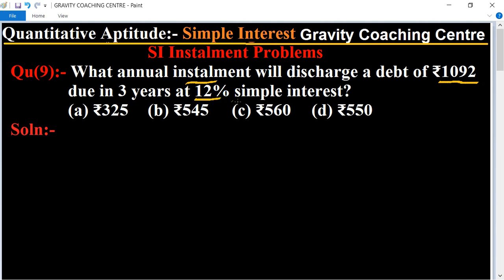In this question, what is the annual installment for an amount of rupees 1092 in three years at the rate of 12% per annum simple interest? We will solve this question by shortcut method. So first of all we will find the value of 100T.